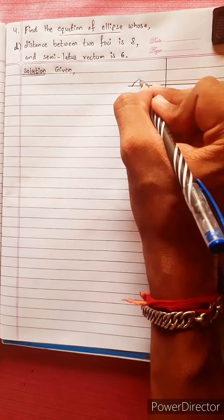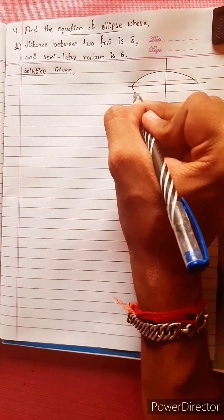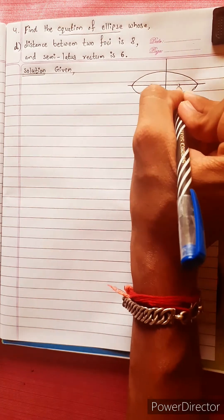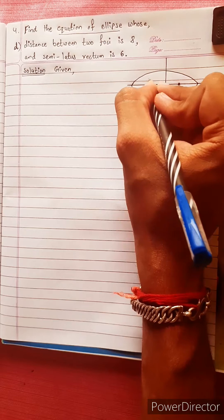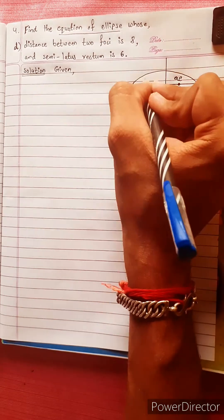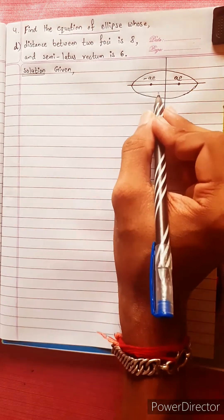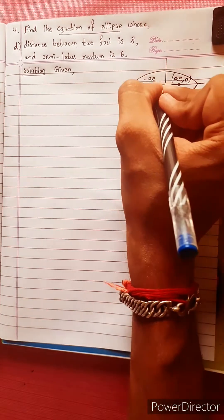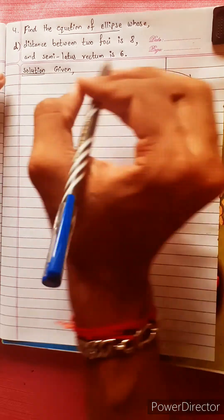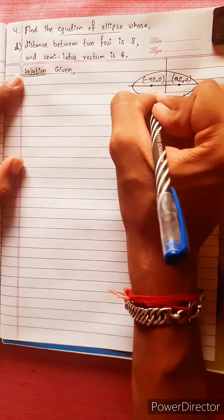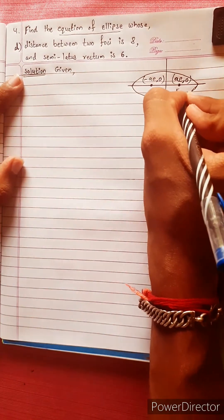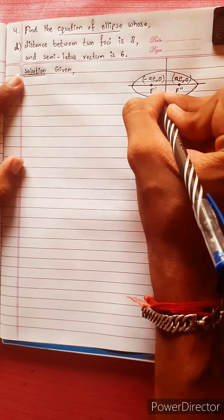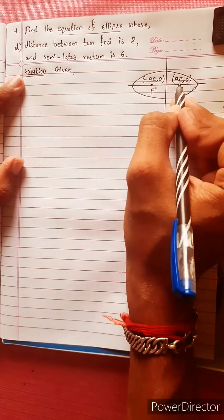Suppose the ellipse is such that a is greater than b. Then the foci are at the points (ae, 0) and (-ae, 0). You have to draw the distance between the two foci, which is 8.